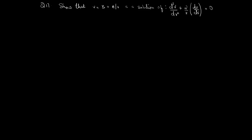Question 17. Show that v = b + a/r is a solution of d²v/dr² + (2/r)(dv/dr) = 0. Given v = b + a/r.